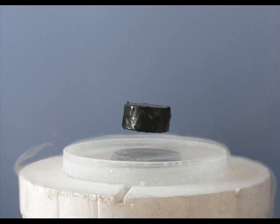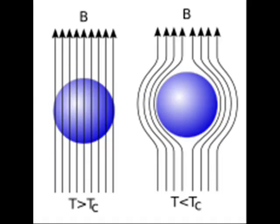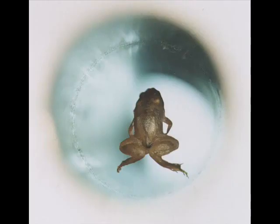However, superconductors will levitate in a constant magnetic field due to the Meissner effect, which is a result of diamagnetism, which is a form of magnetism that is only exhibited by a substance in the presence of an externally applied magnetic field. This is the same thing that levitates the frogs, diamagnetism.